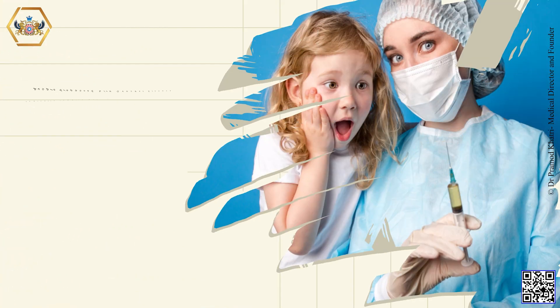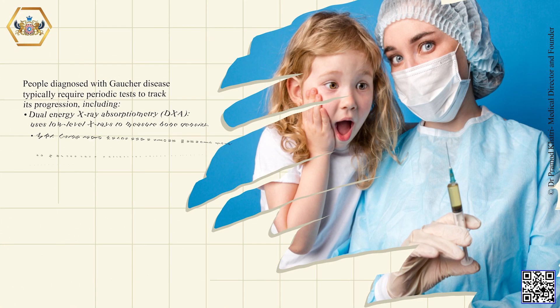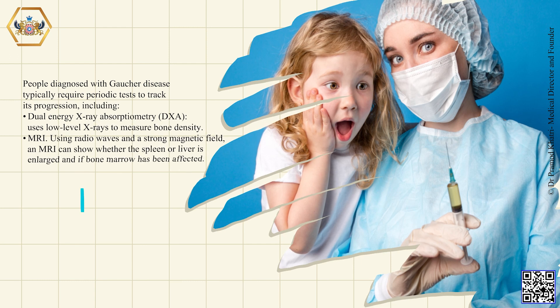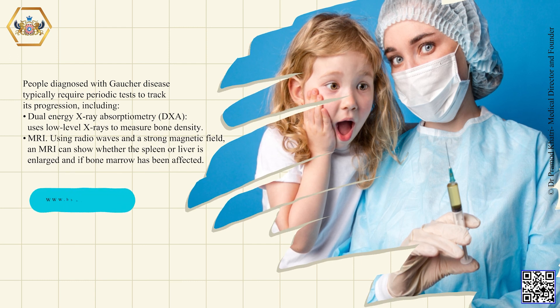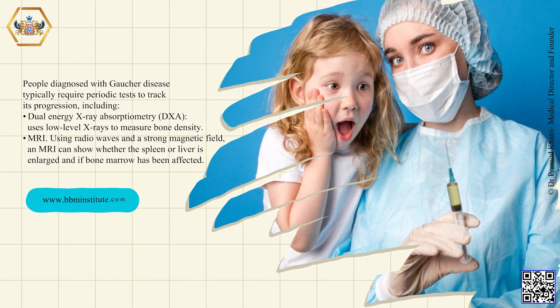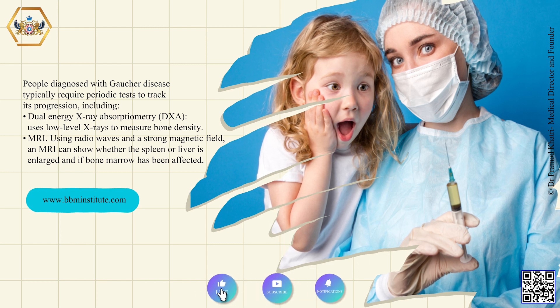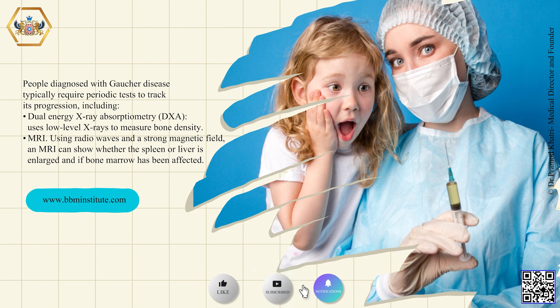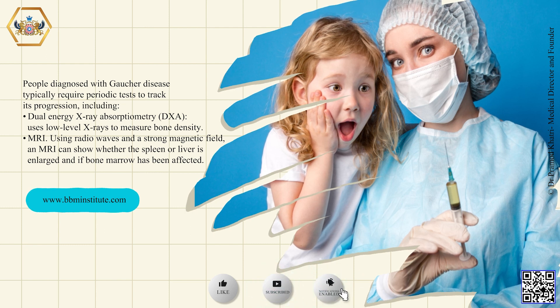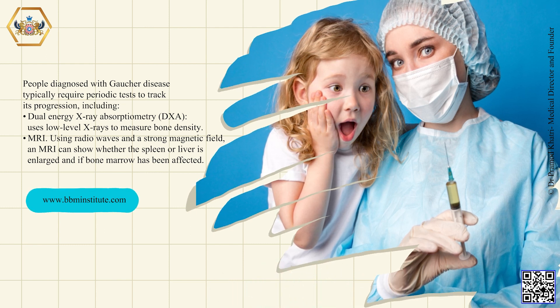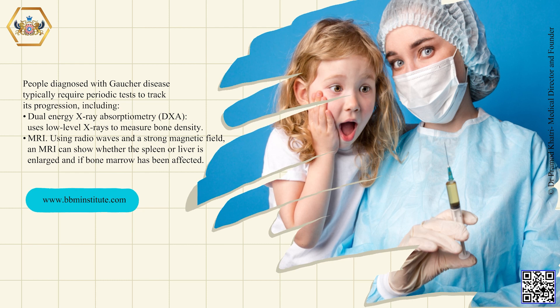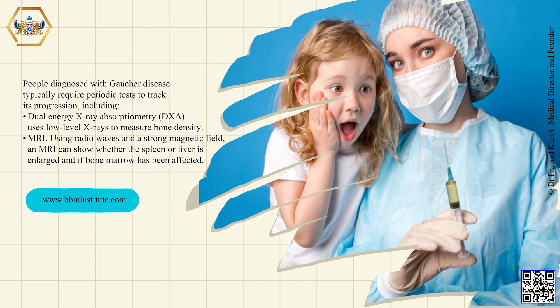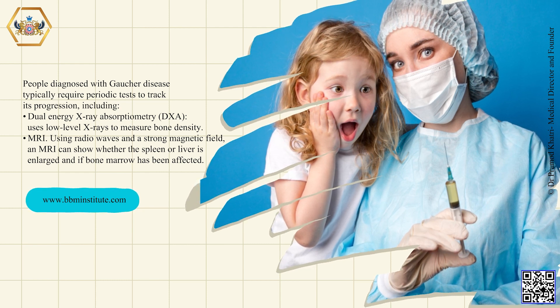People diagnosed with Gaucher disease typically require periodic tests to track its progression, including dual energy X-ray absorptiometry (DEXA). This test uses low-level X-rays to measure bone density. An MRI scan, using radio waves and a strong magnetic field, can show whether the spleen or liver is enlarged and if bone marrow has been affected.